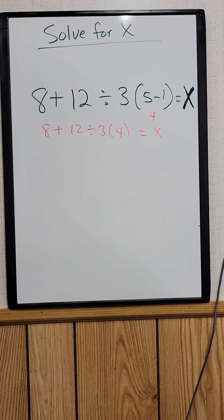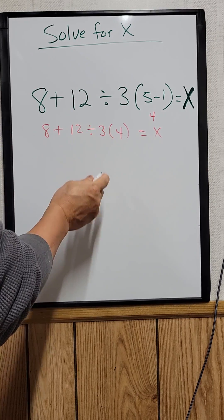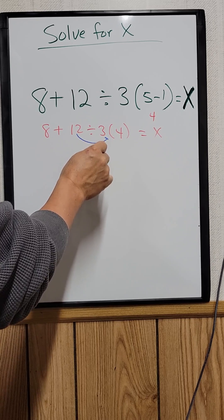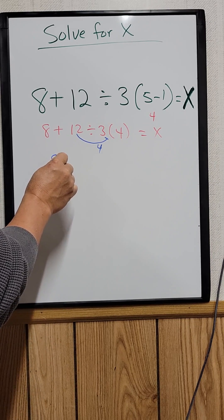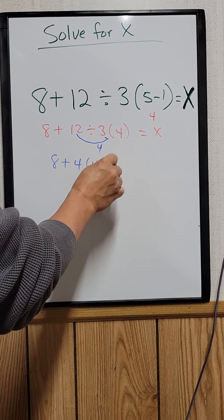The next thing you need to do is divide and multiply, but you have to do that from left to right. So divide 12 by 3, which is equal to 4. And then it would be 8 plus 4 times 4 equals x.